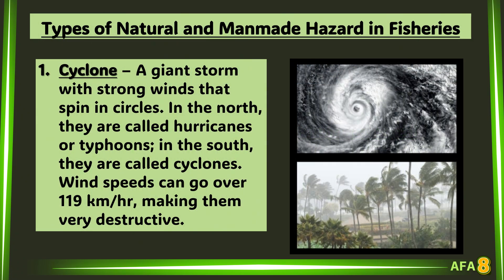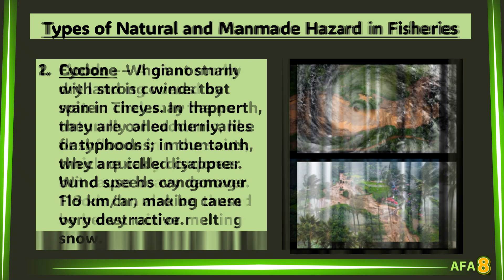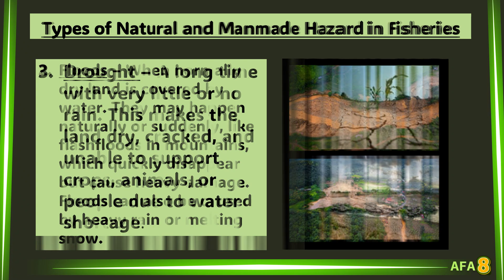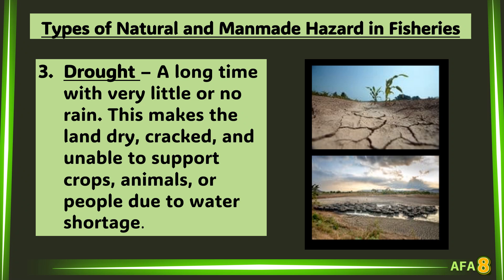Here are examples of natural and man-made hazards directly affecting fisheries. 1. Cyclone: a giant storm with strong winds that spin in circles. In the north they are called hurricanes; in the south they are called cyclones. Wind speeds can go over 119 kilometers per hour, making them very destructive. In the Philippines, we call it typhoon or super typhoons. 2. Floods: when normally dry land is covered by water. They may happen naturally or suddenly, like flash floods in mountains, which quickly disappear but cause heavy damage. Floods can also be caused by heavy rain or melting snow. 3. Drought: a long time with very little or no rain, making the land dry, cracked, and unable to support crops, animals, or people due to water shortage.